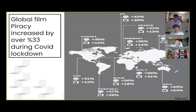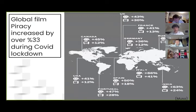During the COVID lockdown, global film piracy increased by over 33%. The USA is tied for the lowest percentage of TV piracy during the COVID lockdown. Italy has the highest percentage increase of movie piracy during the COVID lockdown.